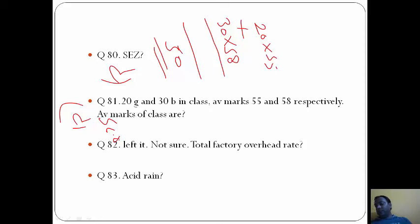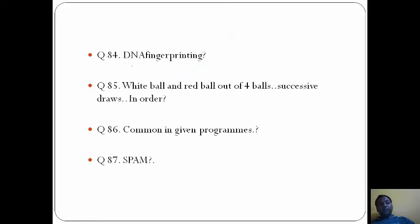Budgeted monthly fixed cost - this I'm not able to do, so left it. Acid rain is due to sulfur dioxide pollution. DNA fingerprinting is used for disputed parentage, that is B. White ball and red ball out of successive draws in order: in the first draw we can take either red or white, so it becomes 2 by 4, that is 1 by 2. In second time we take only one ball, it becomes 1 by 4. So the probability will be 1 by 2 into 1 by 4, that is 1 by 8. The answer here will be B. The common in given programs is that they all are programs related to MSMEs, so the option here is B. SPAM - option here is A, a message distributed indiscriminately.